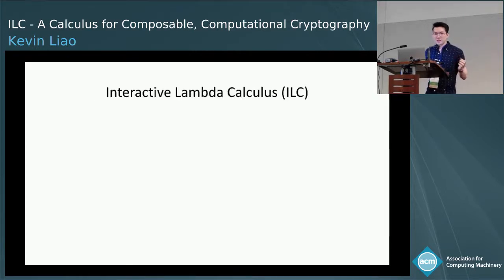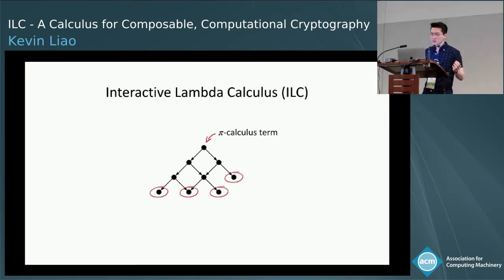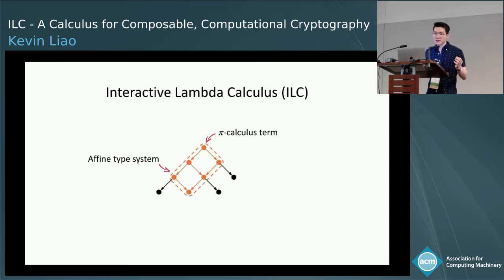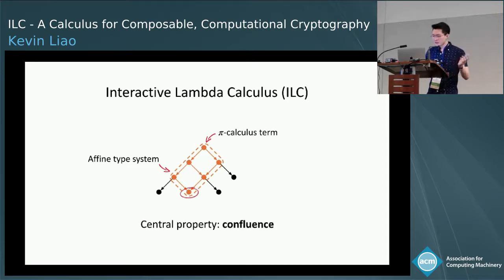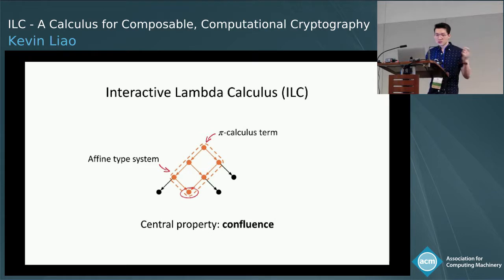The main idea of the interactive lambda calculus is to eliminate these two sources of non-determinism. Our starting point is still a pi-calculus-like language, but we restrict ILC to a subset using an affine type system, which means that certain resources — affine ones — can't be duplicated. In addition to type safety, ILC also enjoys confluence: if we run a program on some inputs and random coins, the choice of reduction steps is inconsequential and we'll always get the same result.